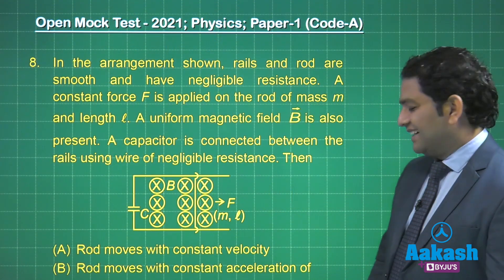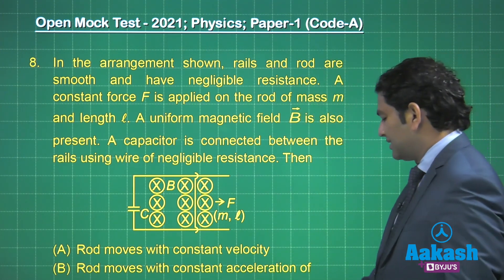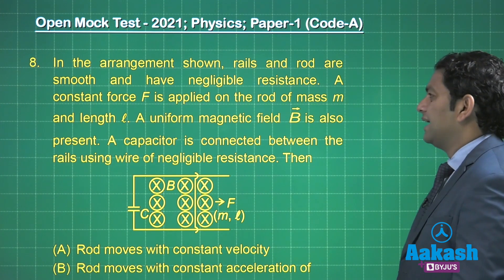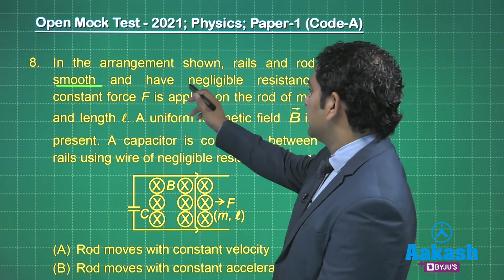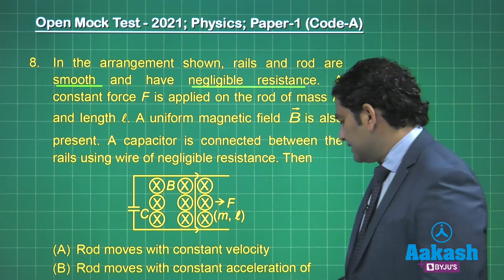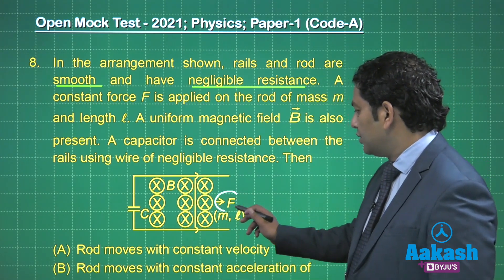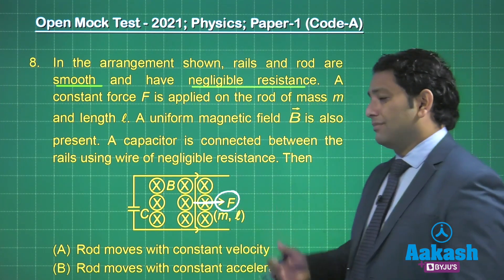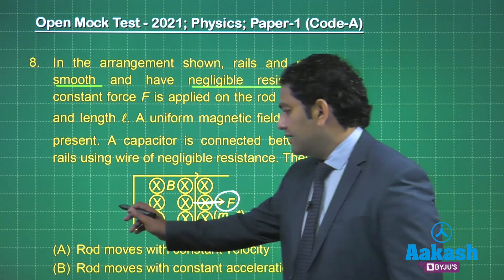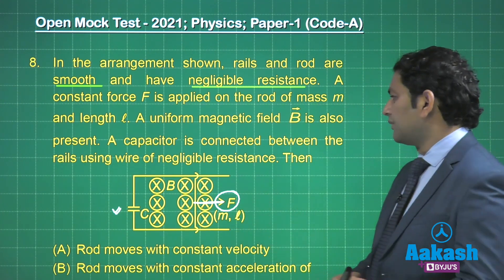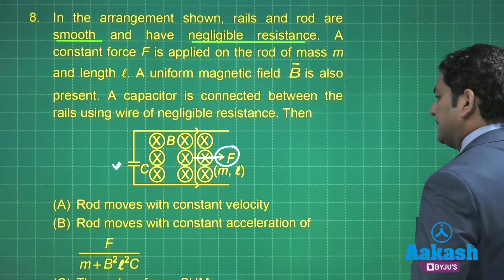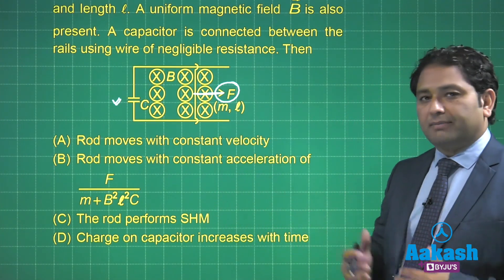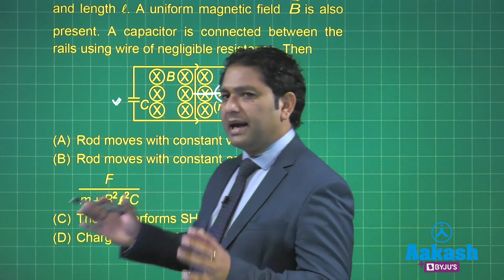Moving on to electromagnetic induction. In the arrangement shown, rails and rod are smooth and have negligible resistance. A force F is applied on the slider of mass m, length l, in a magnetic field. There is a capacitor and no resistance. We need to comment on the acceleration, velocity, type of motion, and the charge on the capacitor.